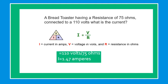In our problem-solving example, a bread toaster having a resistance of 75 ohms is connected to 110 volts — what is the current? By using Ohm's Law, where I equals current in amps, V equals voltage in volts, and R equals resistance in ohms: our voltage is 110 volts divided by 75 ohms. Our current is 1.47 amperes.